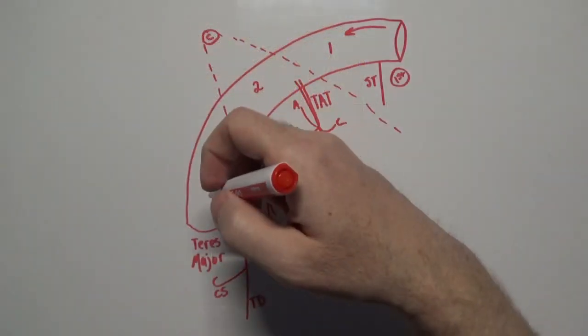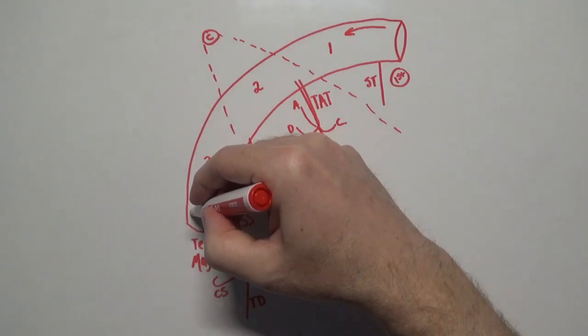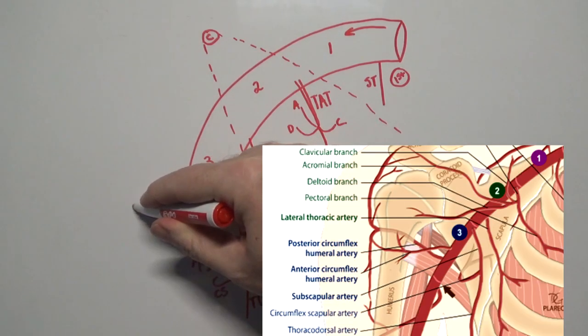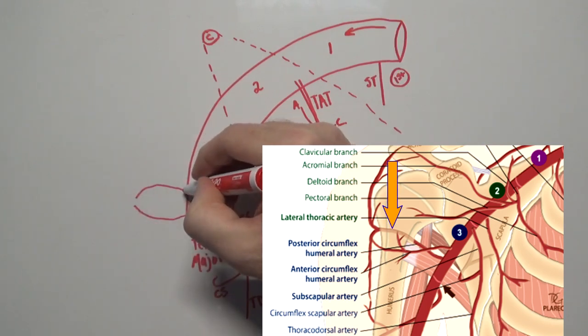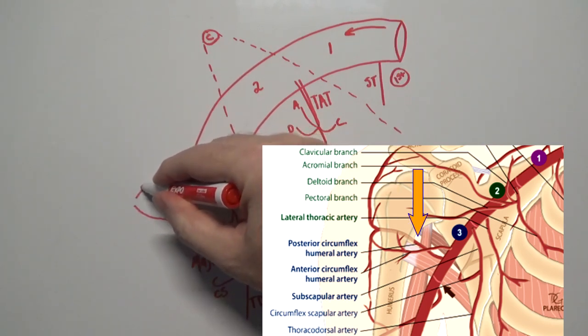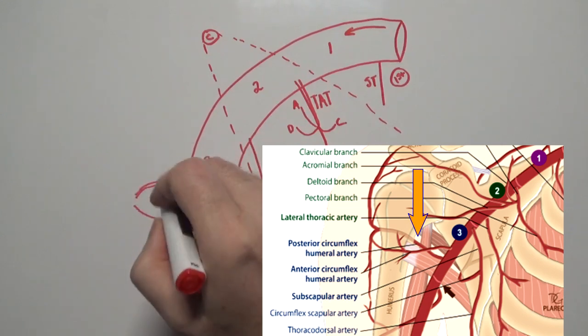The other two branches we can draw together. One passes anterior to the surgical neck of the humerus. The other is often larger and passes posterior to the surgical neck of the humerus, running through the quadrangular space along with the axillary nerve.